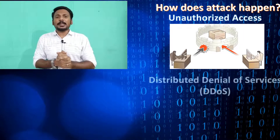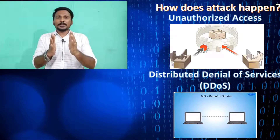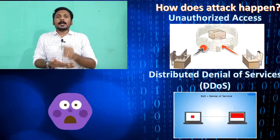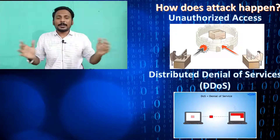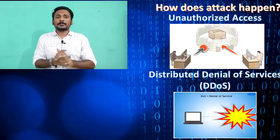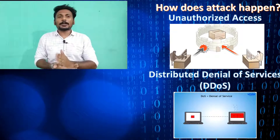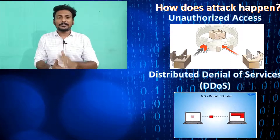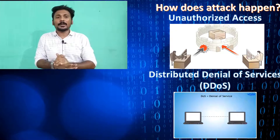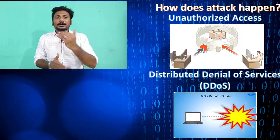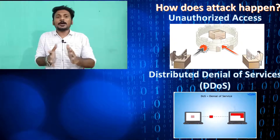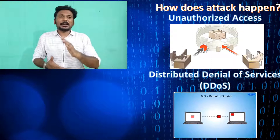The second attack is Distributed Denial of Services — gaining control over your network. If you have a server and someone identifies your device, they can flood it with traffic and crash the server. For example, think of a hotel: if fake customers take up all the tables, real customers can't get in. Similarly, if a server is flooded with fake traffic, it crashes and real users can't access it. That is the concept of Denial of Service.